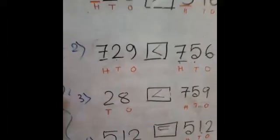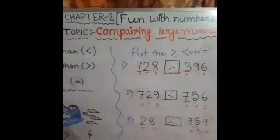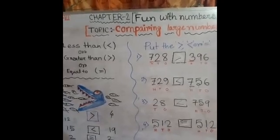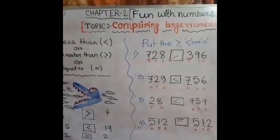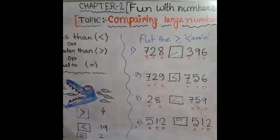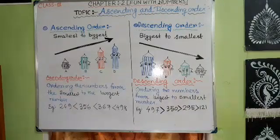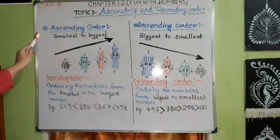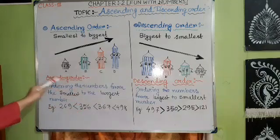In this way, we can easily place the sign and compare large numbers. Now I will discuss the next topic from the same chapter 'Fun with Numbers': ascending and descending order. What is ascending order? Ascending order means arranging numbers from smallest to largest. When we arrange numbers from smallest to biggest, it is called ascending order.